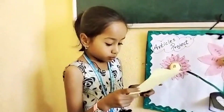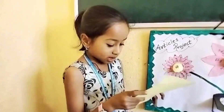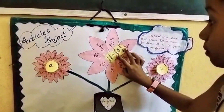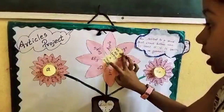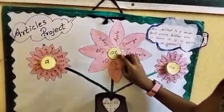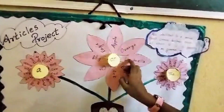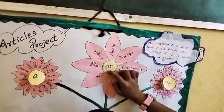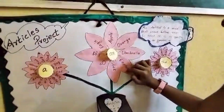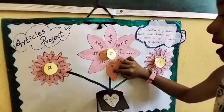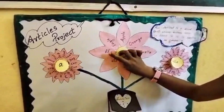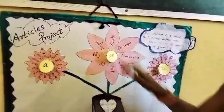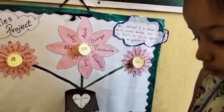When do we use An? We use An before a vowel sound. Example: an orange, an umbrella, an elephant, an ant, an ox, an egg, an eagle, an apple.